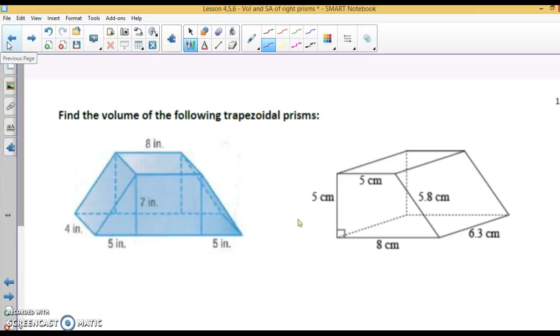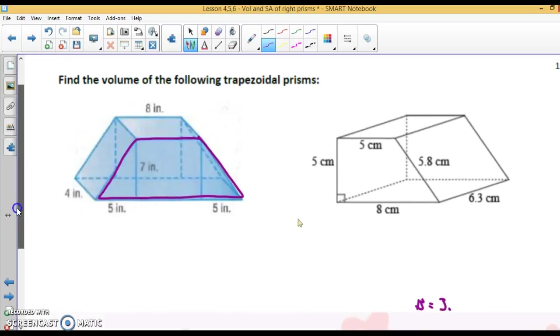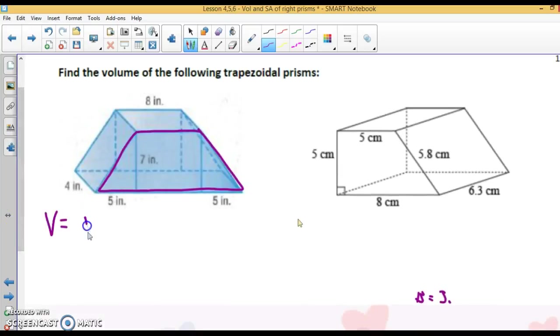Find the volume of this trapezoidal prism. Here's my base. Again, we're using the volume formula: Volume is capital B times W. Capital B, our base is a trapezoid, so we're using our trapezoid formula. When I substitute, you are looking just at the trapezoid.